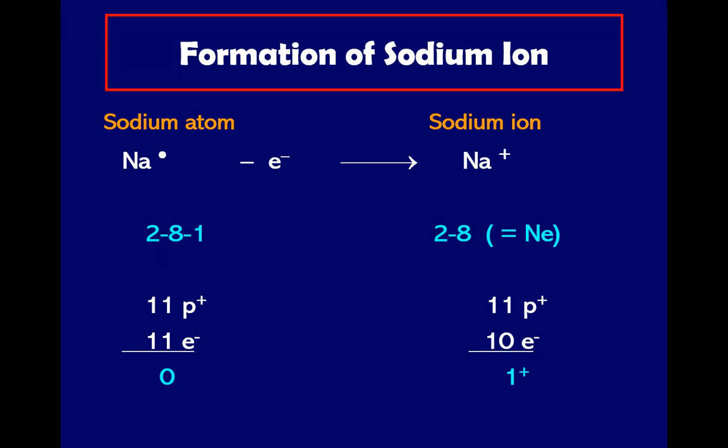Sodium atom has a valence electron of one. To become stable, sodium is a metal so it tends to lose electron. In this atom, sodium's proton is 11 and electron is 11. If we subtract the protons and electrons, the difference is zero.